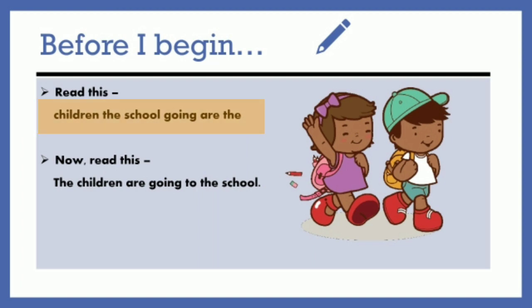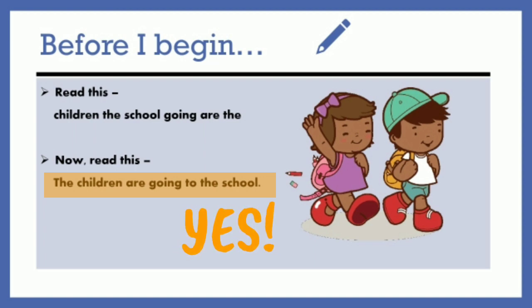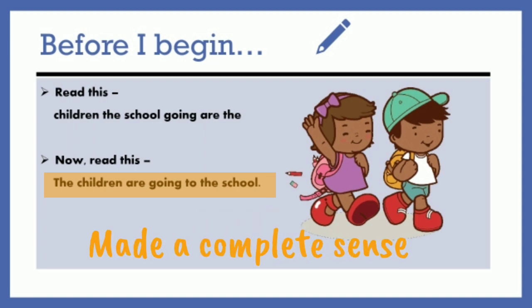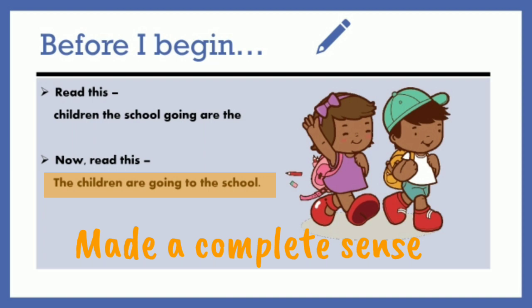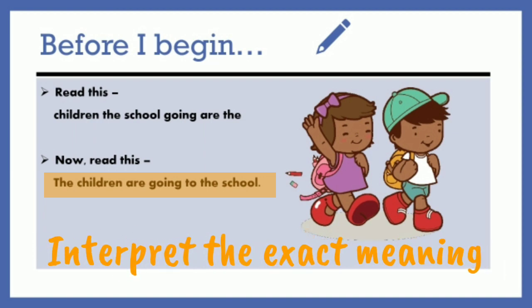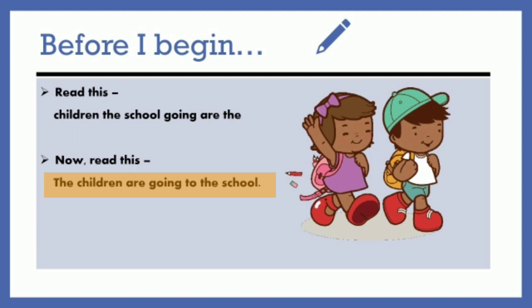Children, the school, going are the... Is it making any sense to you? Well, not at all. Now, read the sentence: 'The children are going to the school.' Did it ring a bell? Yes, it did. Because it actually made a complete sense and you were able to interpret the exact meaning of the sentence. So, this was a sentence and the above one, because it's not making any sense, it cannot be called a sentence.